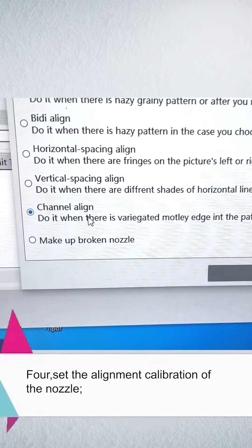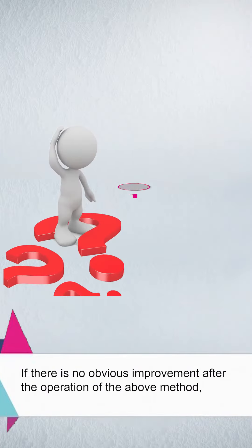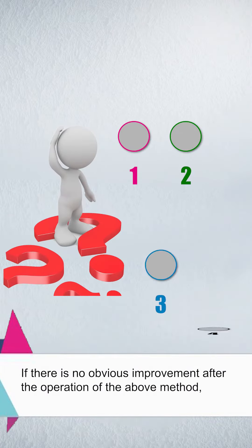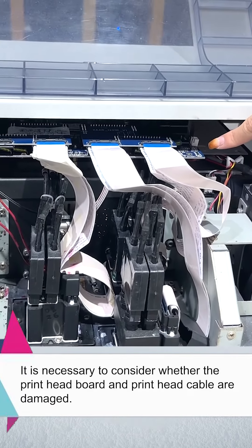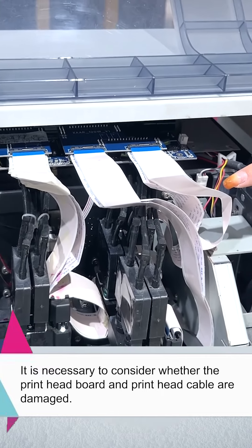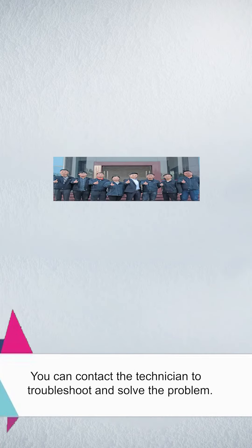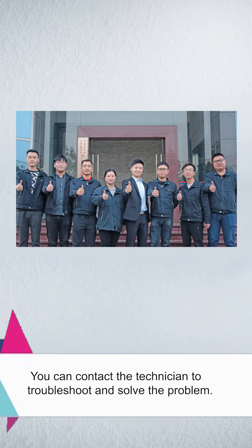4. Set alignment calibration of the nozzle. If there is no obvious improvement after performing the above methods, it is necessary to consider whether the print head board and print head cable are damaged. You can contact a technician to troubleshoot and solve the problem.